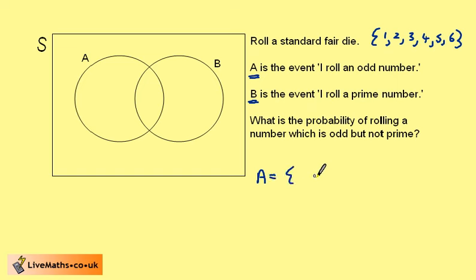If we consider the set A, it contains the odd numbers between 1 and 6. If we consider the event B, it contains the prime numbers between 1 and 6. 3 and 5 are in both sets, so must go in the intersection, where we can see they are within both A and B.